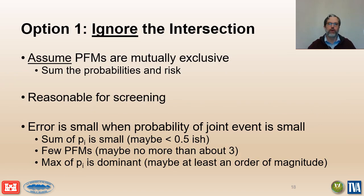Option one calculates total risk by summing individual potential failure modes and assuming they are mutually exclusive. It will always overestimate the annual failure probability to some degree because the overlapping area representing the joint event probability gets double counted. The error can typically be ignored when the probability of the joint event is relatively small — which occurs when the sum of individual failure mode probabilities is small, when there are few failure modes, or when one failure mode has a dominant probability significantly larger than the others.